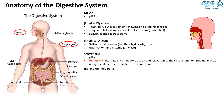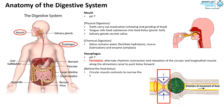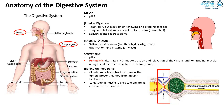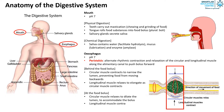Behind the food bolus, as we can see in this diagram, the circular muscle contracts to narrow the lumen, preventing food from moving backwards, and the longitudinal muscle relaxes to elongate as the circular muscle contracts. At the food bolus, the circular muscle relaxes to dilate the lumen to accommodate the bolus, and the longitudinal muscle contracts to shorten the path to increase the speed of bolus movement.